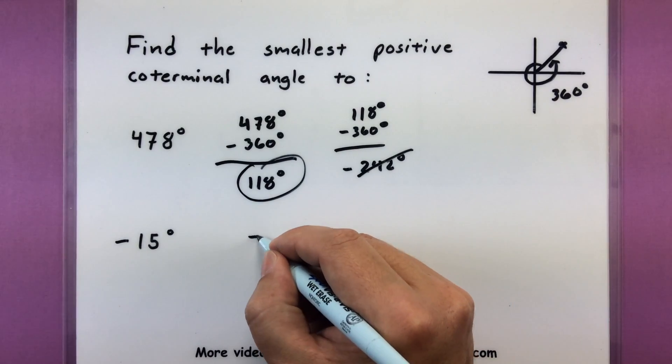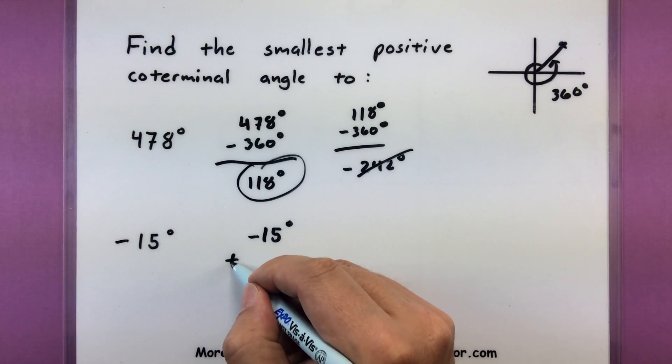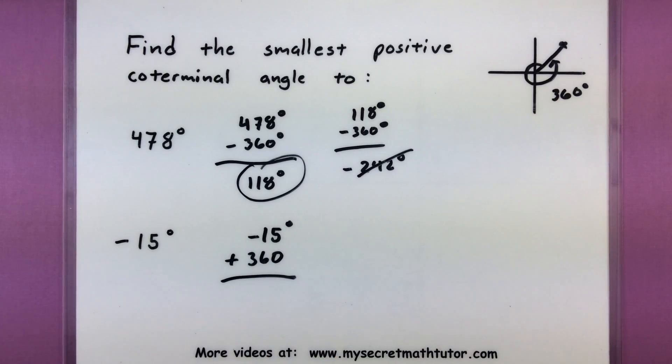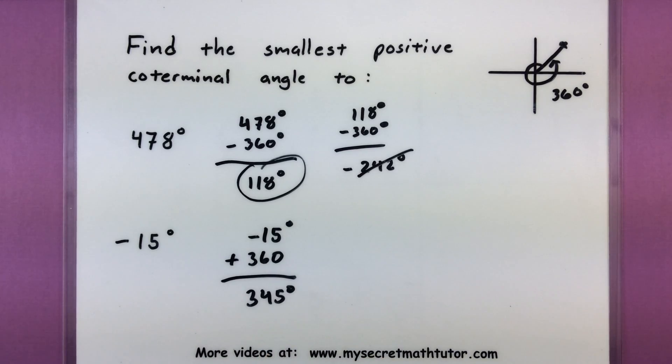Negative 15 degrees. I want something positive that's coterminal, so I'm going to add 360 to this guy. When I do that I get 345 degrees. Now if I keep adding 360, of course I'll get more coterminal angles, but of course we want just the smallest one, so we'll stop right there.